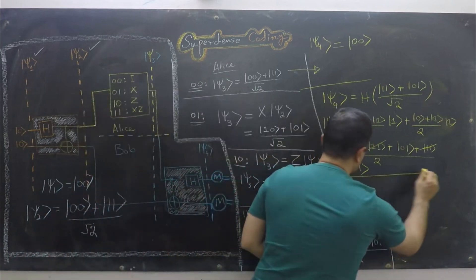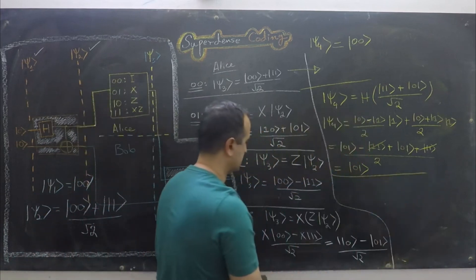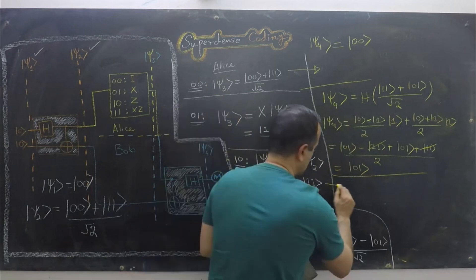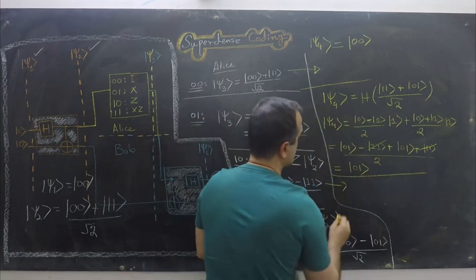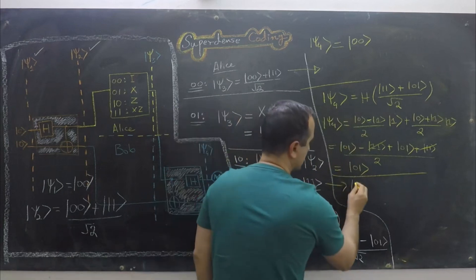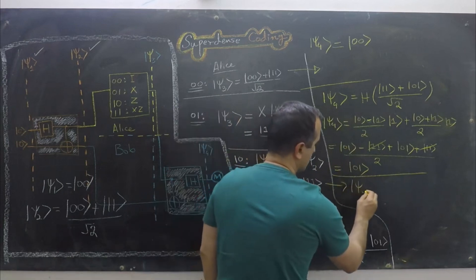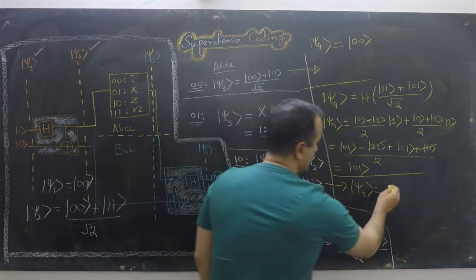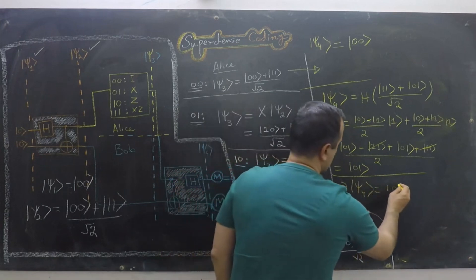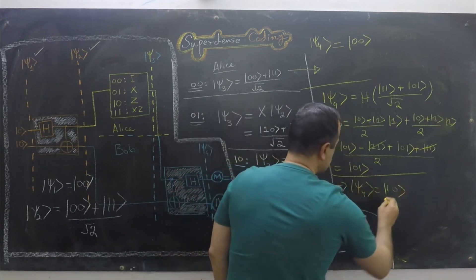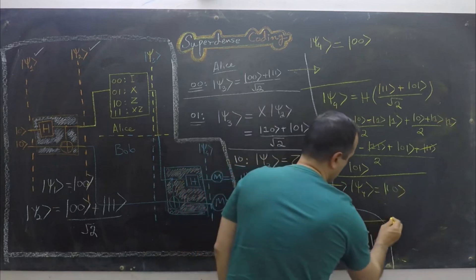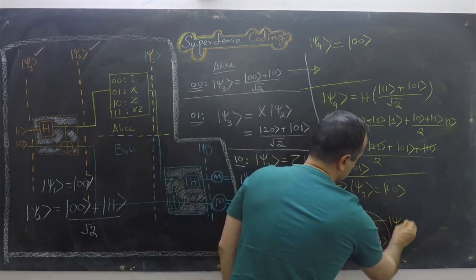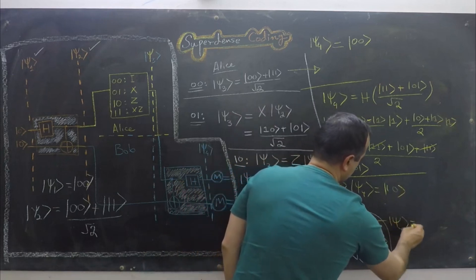Similarly, for the remaining two cases: when Alice sent 10, ket psi 4 will be |10⟩; and when Alice sent 11, ket psi 4 will be |11⟩.